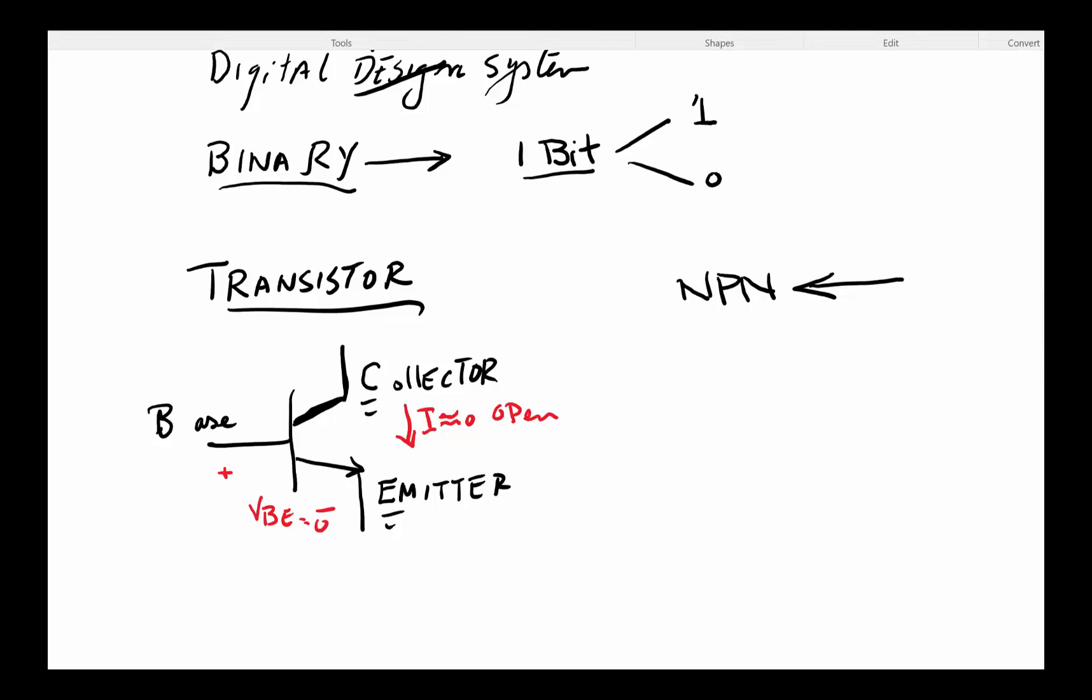Now, if I were to add a voltage here—some voltage larger than typically 0.7 volts for this device—then I'm going to have some small current flowing here, which means the current here, instead of being zero, is going to be larger than zero. I'm going to have a closed switch. That's basically what a transistor is: you put a small amount of voltage across the base and emitter and you close the switch. You remove that voltage and it's open.